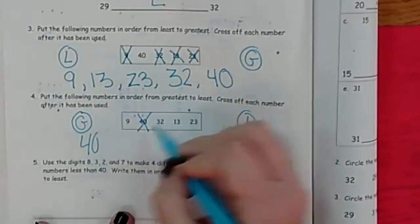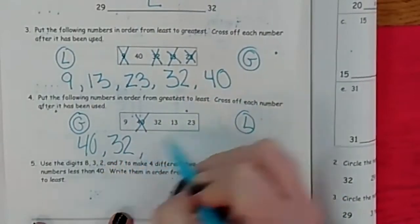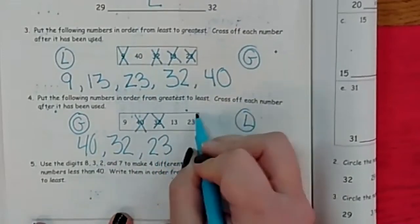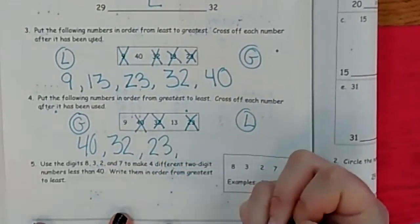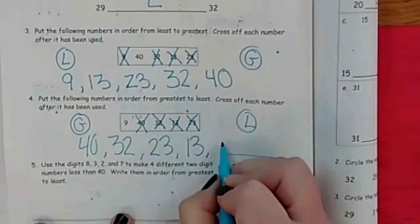Who would be next? Yeah. 32. Cross it off. Who's next? 23. Who's this? Yeah. 13. Who's the smallest number? 9.